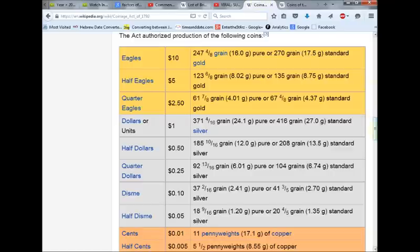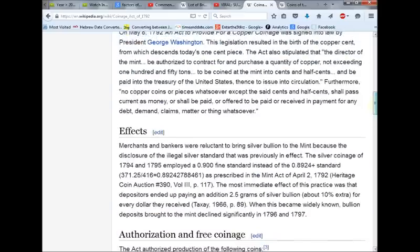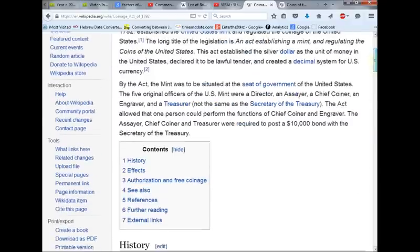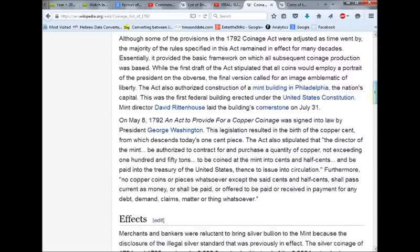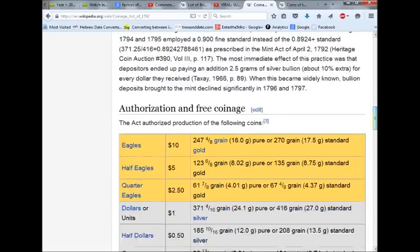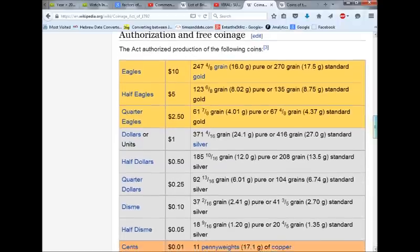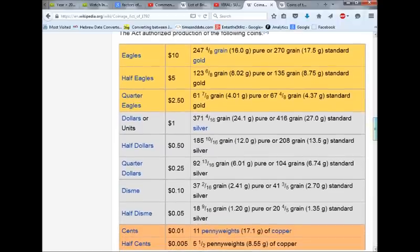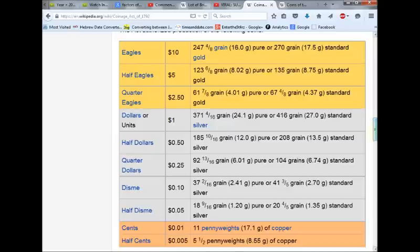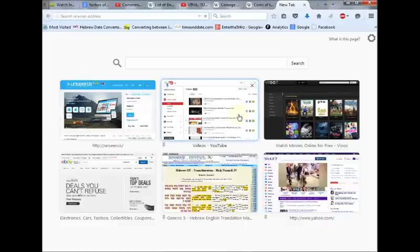322 years ago we had the Coinage Act of 1792. The coinage that was minted in America added up to $19.41. Well guess what, the factors of the number 123, remember the British adds up to 123.88.